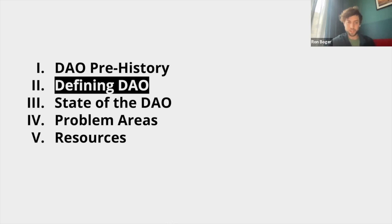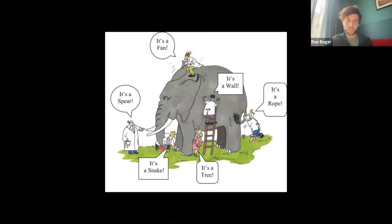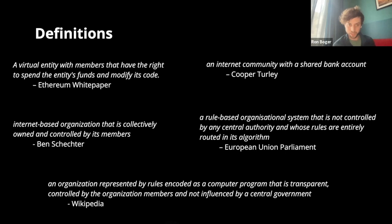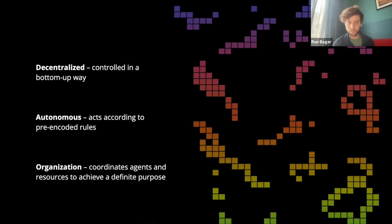So what really is a DAO? A DAO is something that looks completely different depending on how you view it. Here are five accepted definitions: a virtual entity with members that have the right to spend the entity's funds and modify its code; an internet community with a shared bank account; a rule-based organizational system not controlled by a central authority where rules are algorithmic; and an internet-based organization collectively owned and controlled by its members. A pure DAO is controlled bottom-up, has no central control, is autonomous — acting according to pre-encoded rules modifiable by member vote — and coordinates resources to achieve a purpose.